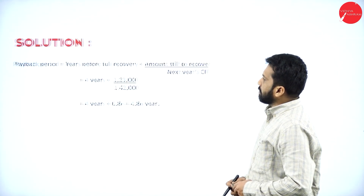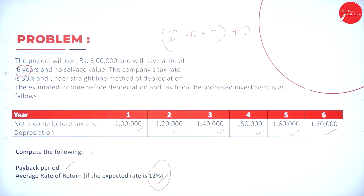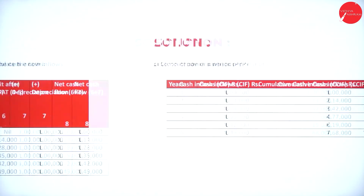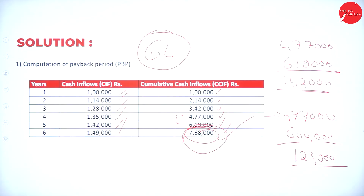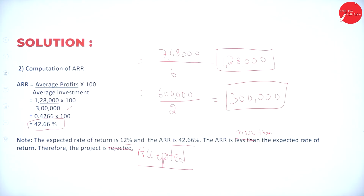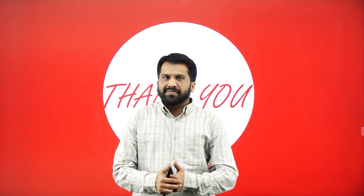I will go back to all the slides — please take a screenshot. This is the problem and its solution. The payback period is 4.86 years. The annual rate of return — normally we should go with discounted value, but here we have gone directly. This is all about today's session. Please work out at home. Thank you.